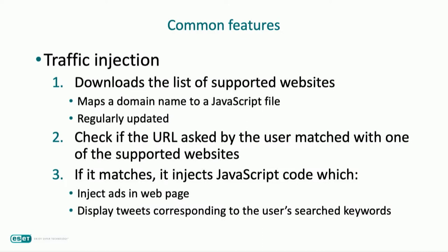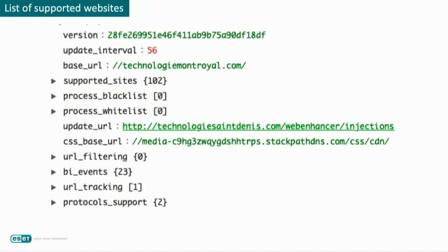Once the software can perform interception, it downloads a list of supported websites. The list maps a domain name to a specific JavaScript file, and for each URL, WAJAM checks if the domain name matches with any entry in the list. If it matches, it injects ads and tweets corresponding to the user's keywords. Here is an example of WAJAM's list of supported websites — essentially search engines, approximately 100 of them. The version of the list is identified by a hash and is updated every 50 seconds.